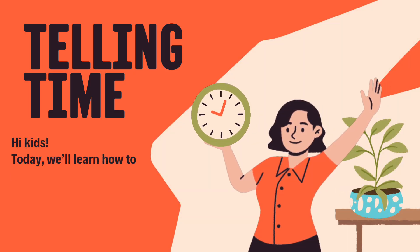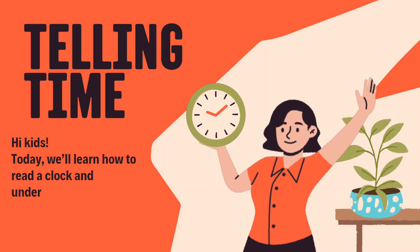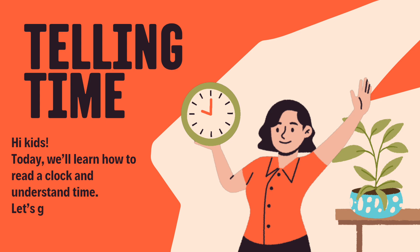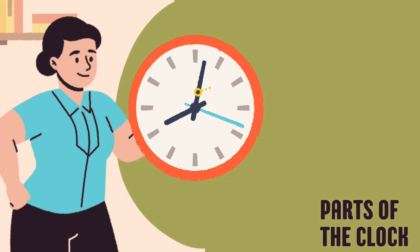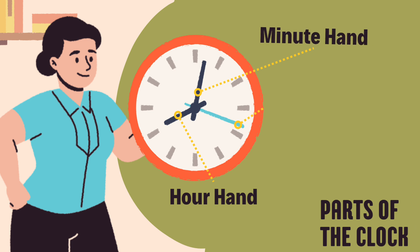Hi kids, today we'll learn how to read a clock and understand time. Let's get started. A clock has three hands that help us tell time. The hour hand is the shortest hand and it shows the hours — it moves the slowest of the three hands. The minute hand is longer and it tells the minutes; it moves faster than the hour hand and shows the minutes past an hour.